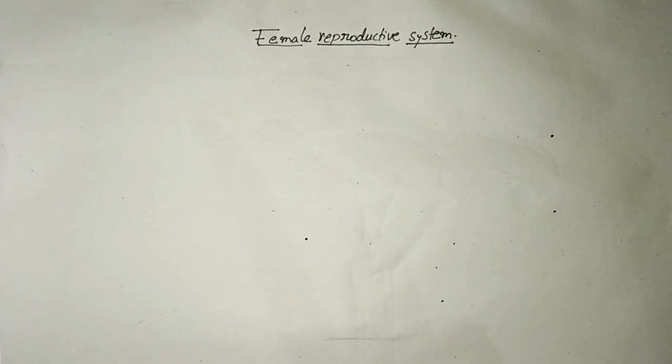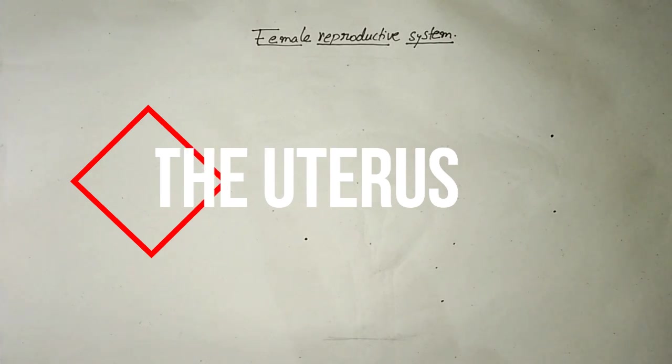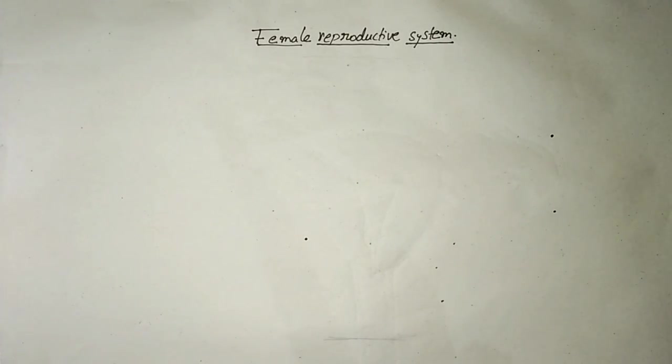Hello friends, the female reproductive system has a very important organ called the uterus, which is also called the womb. And first we are going to start with the womb or uterus of the female reproductive system.